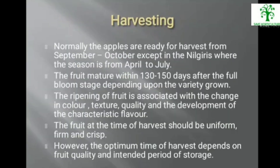Apples are normally ready for harvest from September to October, except in the Nilgiris where the season is from April to July. The fruit matures within 130 to 150 days after the full bloom stage, depending upon the variety grown. Ripening is associated with change in colour, texture, quality, and development of characteristic flavour. At the time of harvest, fruit should be uniform, firm, and crisp.